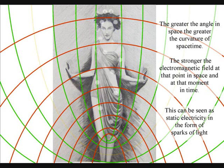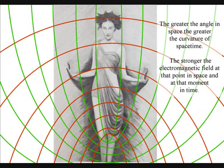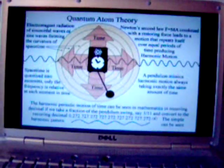This can be seen as sparks of light associated with static electricity. The atoms will even distort the geometry of space-time, creating electrostatic discharge in the form of lightning.